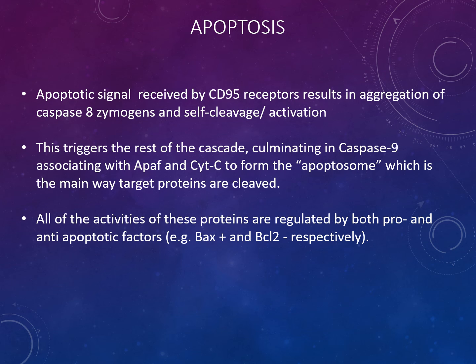In apoptosis, apoptotic signals are sensed by CD95 receptors, resulting in aggregation of caspase zymogen and self-cleavage activation. This triggers the rest of the cascade, culminating in caspase 9 associated with Apaf-1 and cytochrome c to form the apoptosome — the main way target proteins are cleaved. All of these activities are regulated by both pro- and anti-apoptotic factors such as Bax and Bcl-2. Generally there's a battle in the cell between pro- and anti-apoptotic Bcl-2 family member proteins, and the relative concentrations determine whether apoptosis occurs.